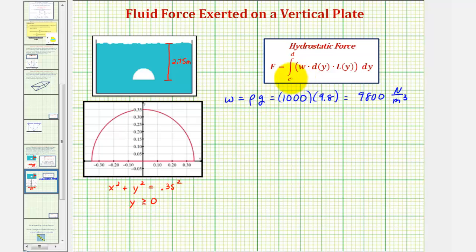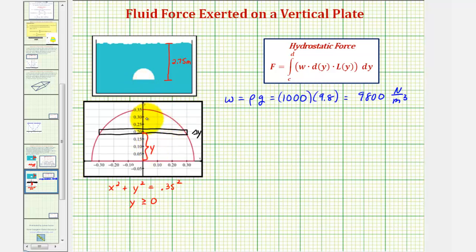Before we find d(y) and l(y), it's helpful to sketch a horizontal slice of the window using a rectangle. The height of this rectangle is Δy, which is why we integrate with respect to y. If we let y be the distance from the rectangle to the origin, then d(y) — the depth from the slice to the top of the water — equals 2.75 minus y.